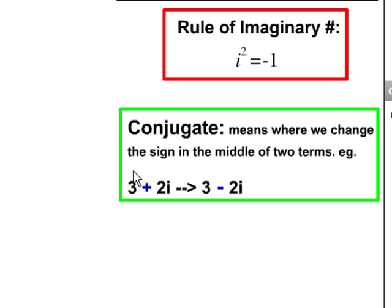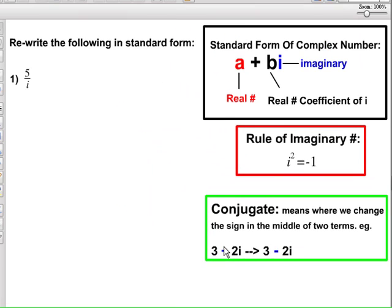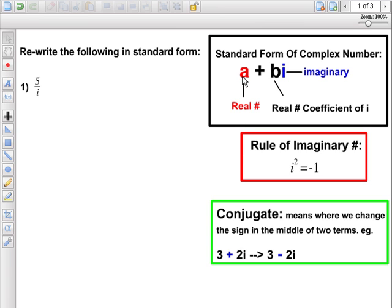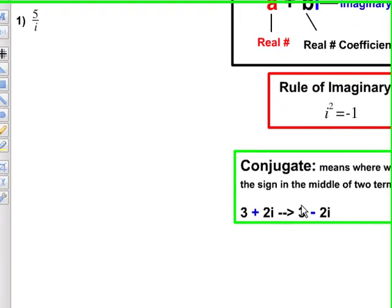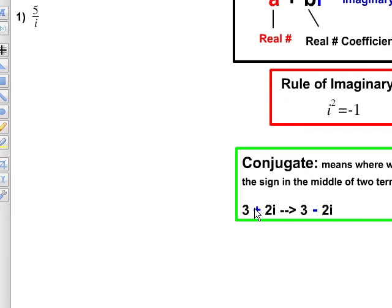For example, we have two terms here, which is 3 plus 2i. Notice that it's in the standard form. So the conjugate of 3 plus 2i will basically change into 3 minus 2i, which you see in blue. The plus changes into minus.